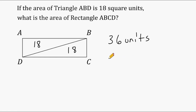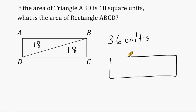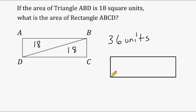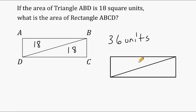One thing we should know about any rectangle is that if we cut it in half by drawing a diagonal across it, we create two congruent triangles. So if the area of one of those two triangles is given, we know the other triangle, which is congruent, will be equal in area.